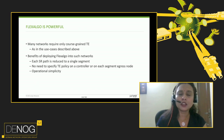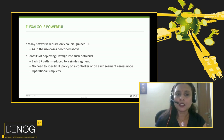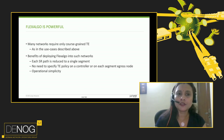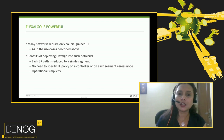Another advantage of Flex Algo is that, while this presentation mostly showed examples using MPLS labels, because Flex Algo uses just the IGP extensions, it can be extended and used for pure IP networks — where there is no MPLS — to achieve traffic engineering in IPv4 as well as IPv6 networks.